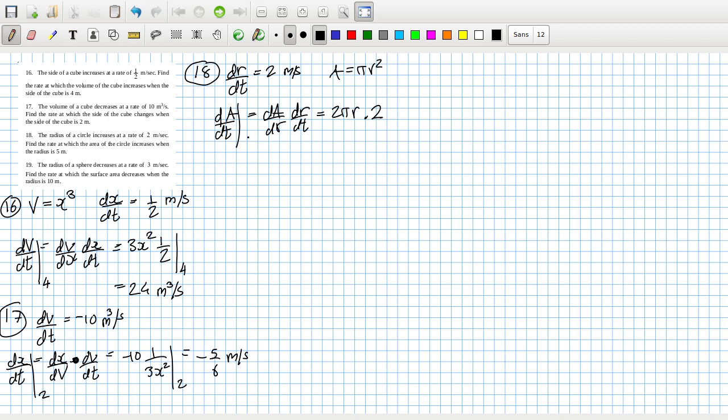And we want this when the radius is 5, so when this is 5. So that would equal 2 times 2 times 5 pi, which is 20 pi metres squared per second.